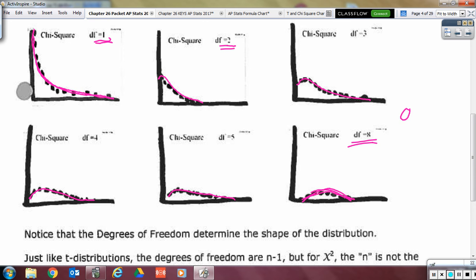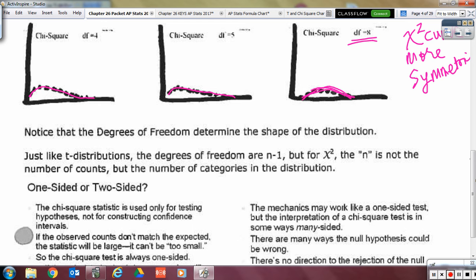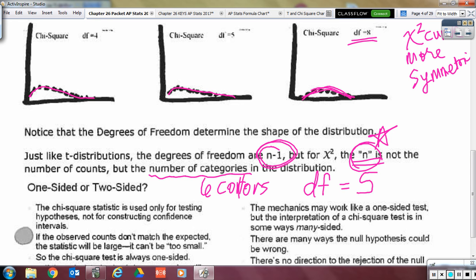They do start becoming a little bit more symmetrical and not quite as skewed. So, as degrees of freedom goes up, the chi-squared curve becomes more symmetric and not as skewed right. Now let's talk about those degrees of freedom. Just like the t-distributions, they are n minus one, but this is a big deal. The n is not the number of M&Ms. It's not your 80 M&Ms, or your 52 M&Ms, or your 60 M&Ms. n is not the number of M&Ms. It is the number of categories that we all had and how many categories did we all have? We had six colors, so that made our degrees of freedom for every single one of us in this class five, even though we had different amounts of M&Ms.